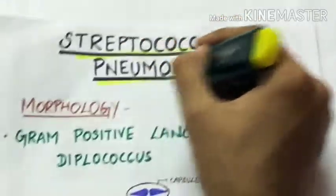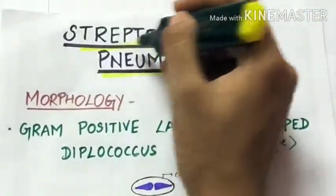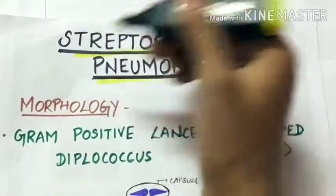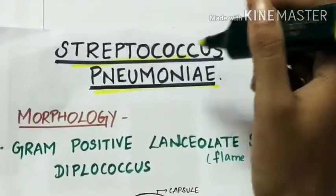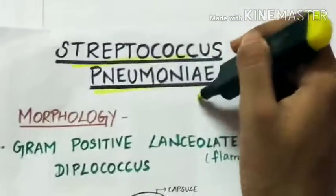Streptococcus pneumoniae. Strepto means they are arranged in chains. Coccus because they are spherical in shape. Pneumoniae because they cause pneumonia.